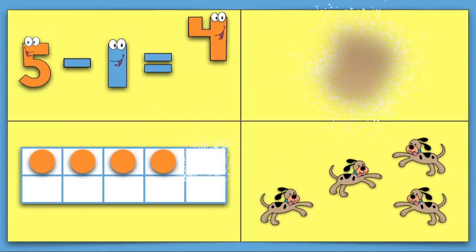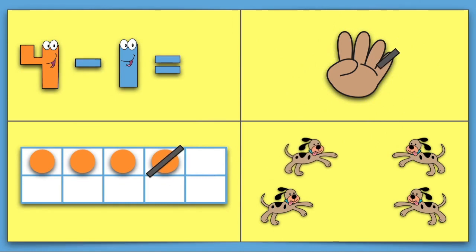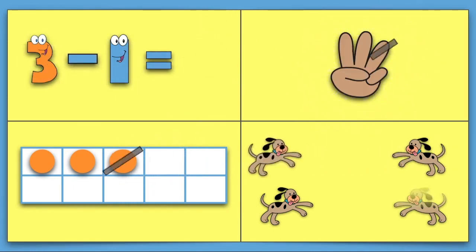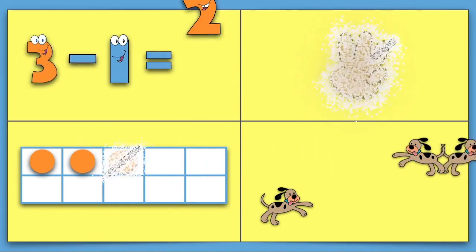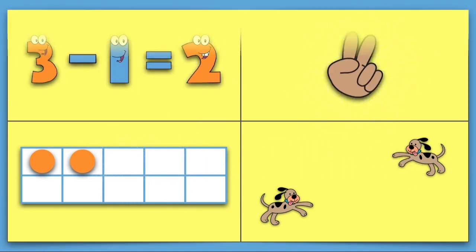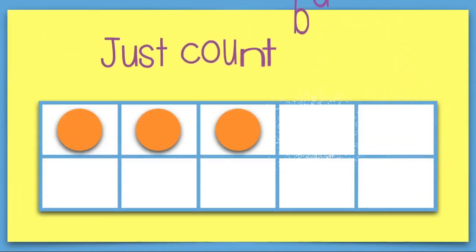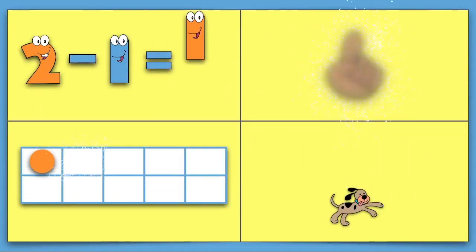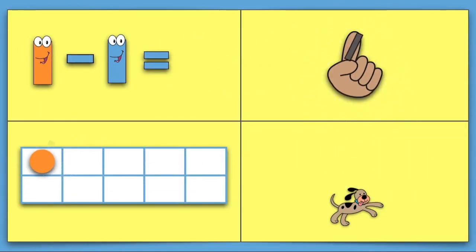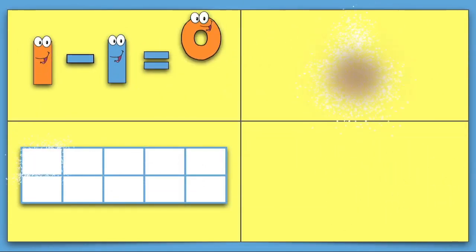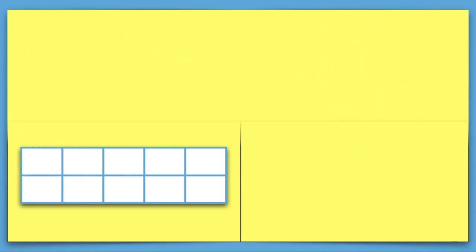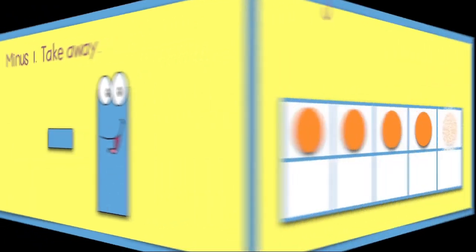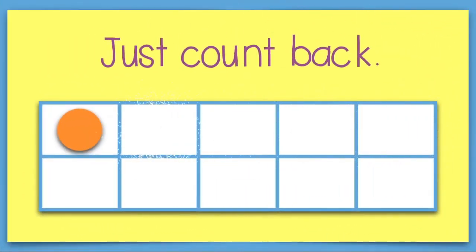5 minus 1 equals 4, 4 minus 1 equals 3, 3 minus 1 equals 2, just count back. 2 minus 1 equals 1, 1 minus 1 equals 0. Minus 1, take away, just count back.